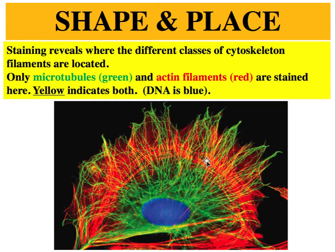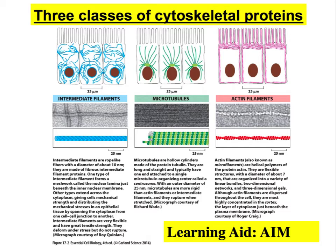Intermediate filaments are not shown in the image, but DNA is coloured blue. Students often forget one of the three types, so remember the word AIM: A stands for actin, I for intermediate, and M for microtubules — referring to all three categories.